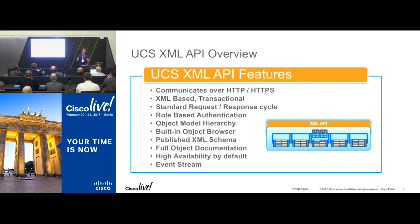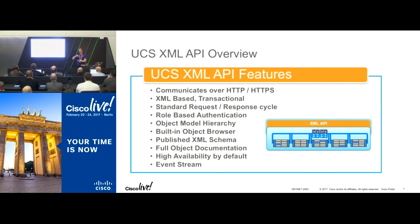The event stream means you can set something to happen — like associating a service profile — and instead of querying whether that service profile has associated, you can just listen to the event stream. When the event comes out saying the service profile is associated, go on to your next step. Those are the features of the XML API, and they're all available in the SDK.